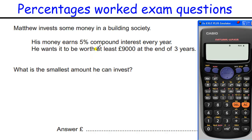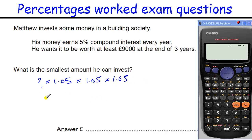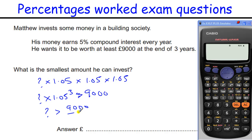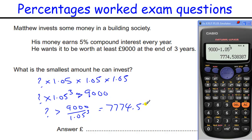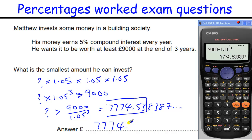Compound interest — a nice standard question but with a slight twist: we're trying to work out the smallest amount invested. Whatever we invested over three years at compound interest, we times by 1.05 three times — that's 1.05 cubed — and that needs to be bigger than £9,000. So we divide by 1.05 cubed to get the minimum amount: 7774.538... In money terms we round up to the next penny, making it £7774.54.